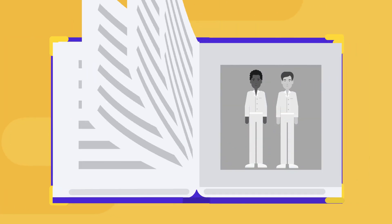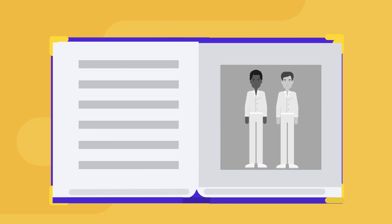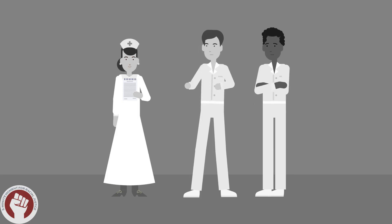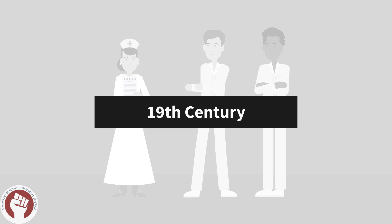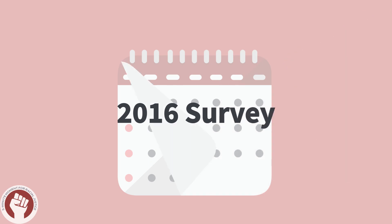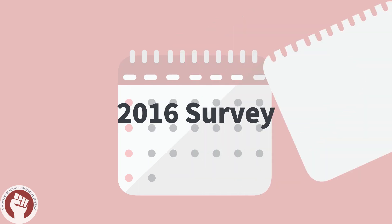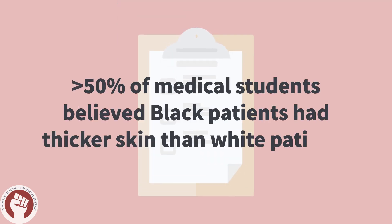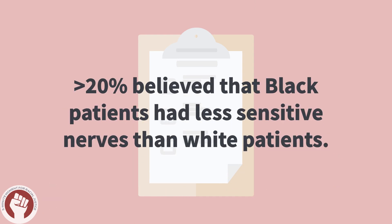For example, the inaccurate belief that black patients are biologically different from white patients dates back to the 19th century. Published articles with little validity stated that black people had less sensitive nervous systems, and some were insensible to pain. This false belief persists even to this day, where a 2016 survey showed that over 50% of medical students believed that black patients had thicker skin than white patients, and over 20% believed that black patients had less sensitive nerves than white patients.